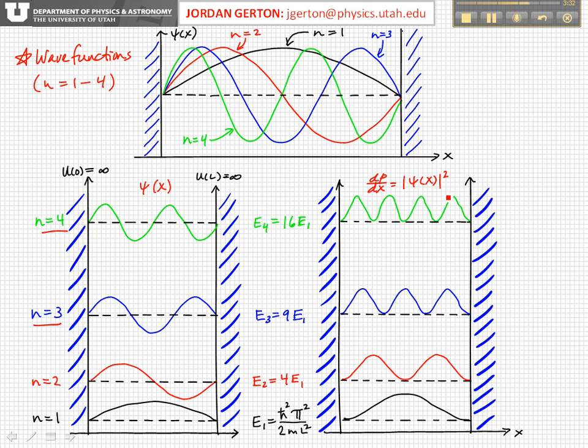There's something in quantum mechanics called the correspondence principle that says that quantum mechanics has to give you predictions which agree with normal classical mechanics in the appropriate limit. That is, in this case, for massive particles and a macroscopic well.